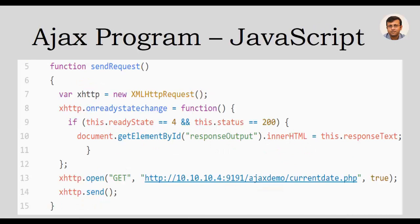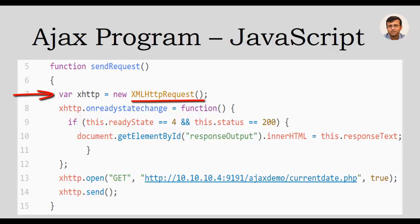We will now see the JavaScript function where we will also be using the Ajax object. sendRequest is a user-defined function which will be called when the button is clicked. The very first statement of this function, on line 7, creates an object xhttp of XMLHttpRequest. The XMLHttpRequest is part of the Ajax API. The sendRequest function will start the asynchronous communication.